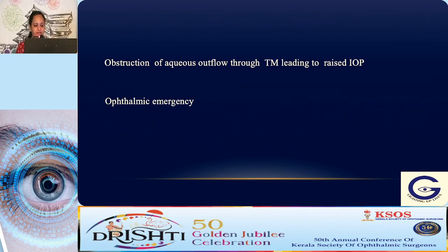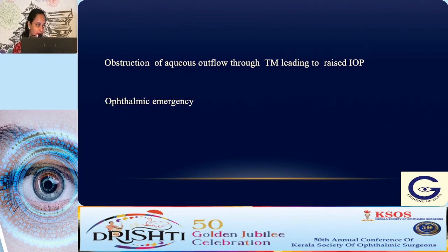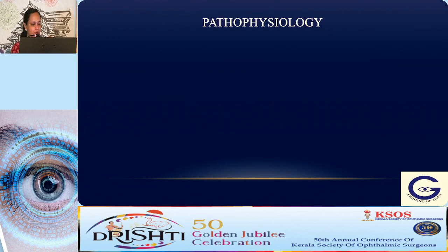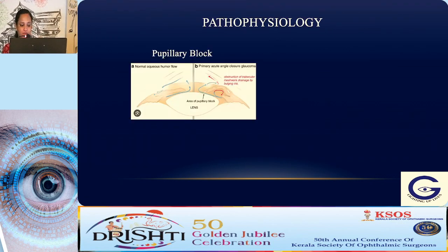What happens in acute angle closure is a sudden obstruction of the aqueous outflow through the trabecular meshwork leading to raised intraocular pressure. It is an ophthalmic emergency. Now we will go on to the pathophysiology and the mechanisms involved.